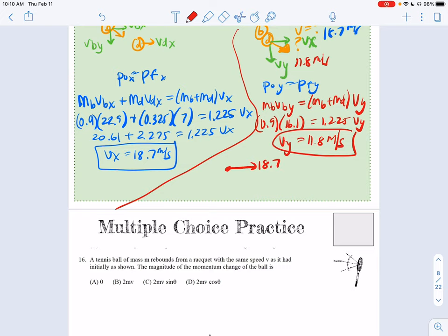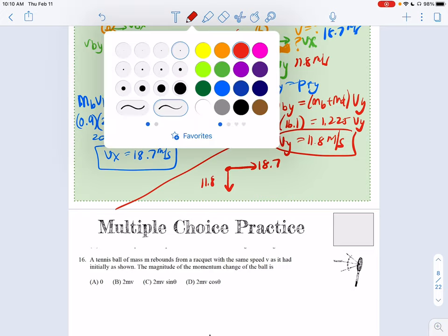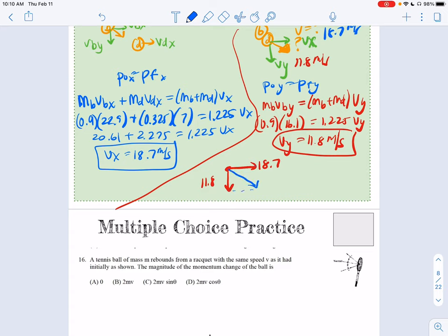So if I have this way 18.7, in this way 11.8, their combined is going to be along this vector here. So Pythagorean theorem V squared. I just have to write all this out because I don't have the good calculator. 349.69 plus 139.24 equals, square root V equals 22.1 meters per second.